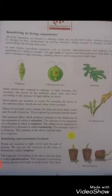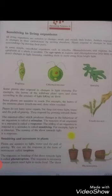Plants do not have sense organs. Plants ke paas sense organs nahi hootethe. But they can sense light, water, and the pull of gravity. But unke paas sense hootethe hain light, water aur pull of gravity.